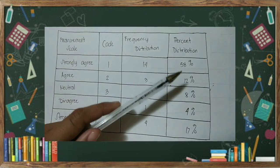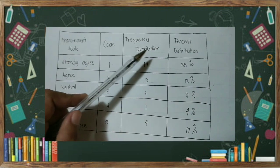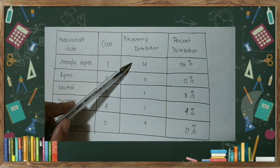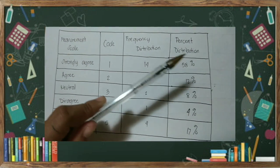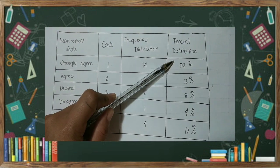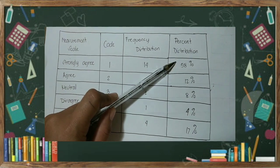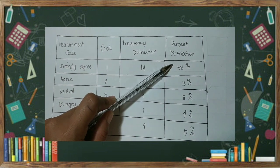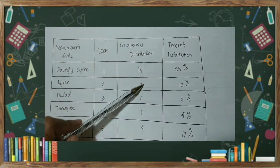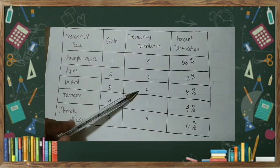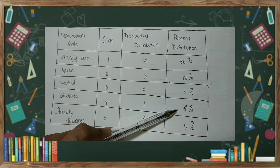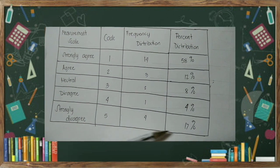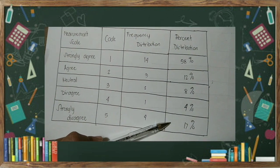So, you have 14 is 58% of the total sample size. So, you will write 58% here in the percent distribution, while 3 is 12%, 2 is 8%, 1 is 4%, and 4 is 17%.